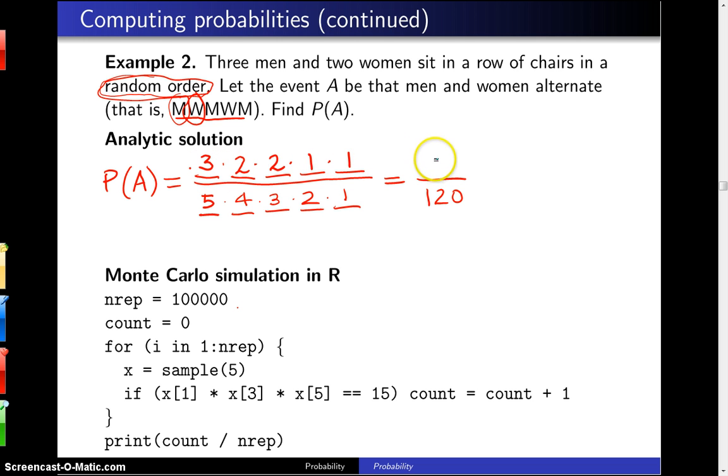Only one woman left here and one woman left there. So three times two times two, that's twelve. Twelve divided by 120 is one-tenth. Now this is called an analytic solution, and under the assumptions in the question, and that key assumption is that the 120 different possibilities are equally likely, this is exact.